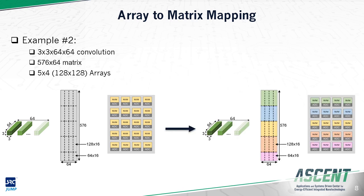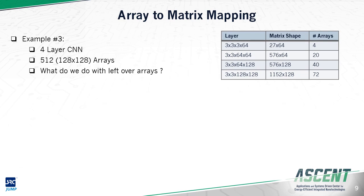The figure on the right shows a color-coded version of this mapping. In example 3, we map a 4-layer CNN to 512 128 by 128 arrays. The table on the right shows the shape of each layer and the total number of arrays required to store it. We note that none of these layers require 512 arrays — in fact, they require significantly less. So what do we do with the leftover arrays?